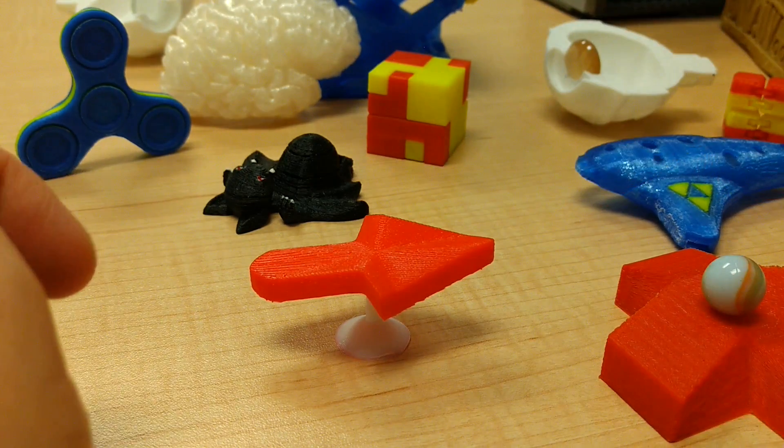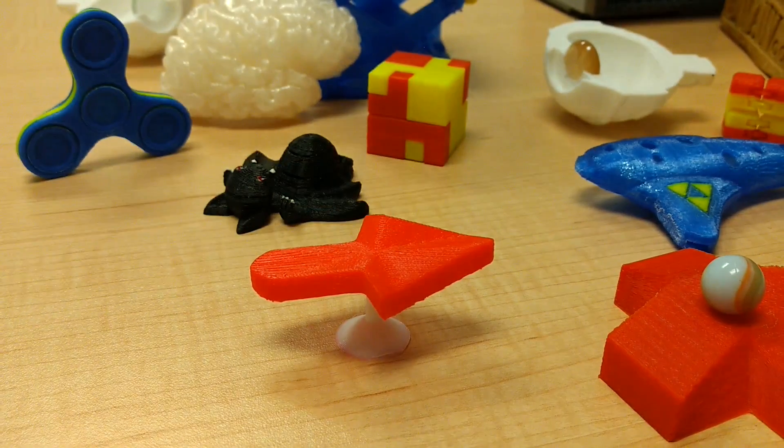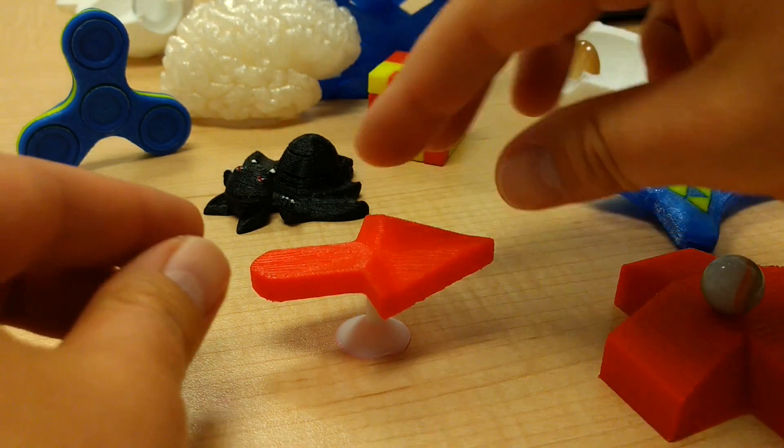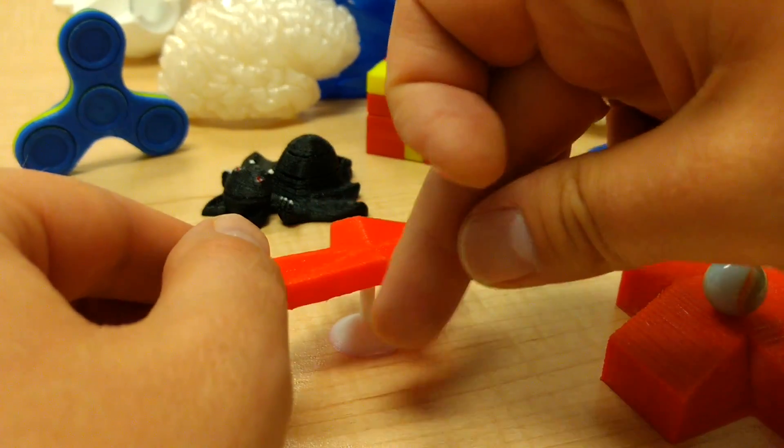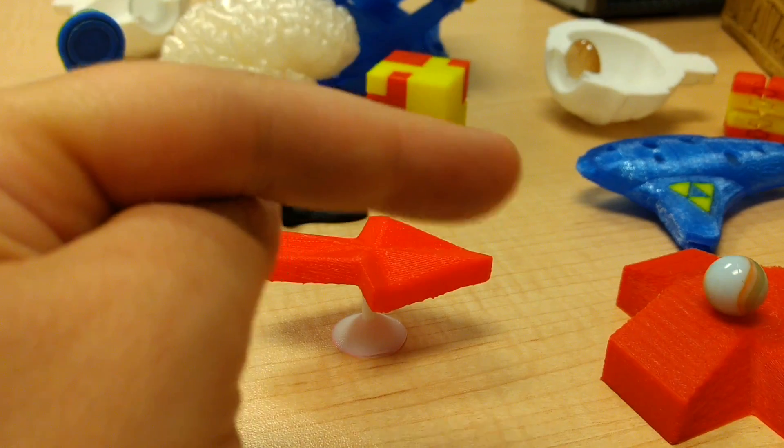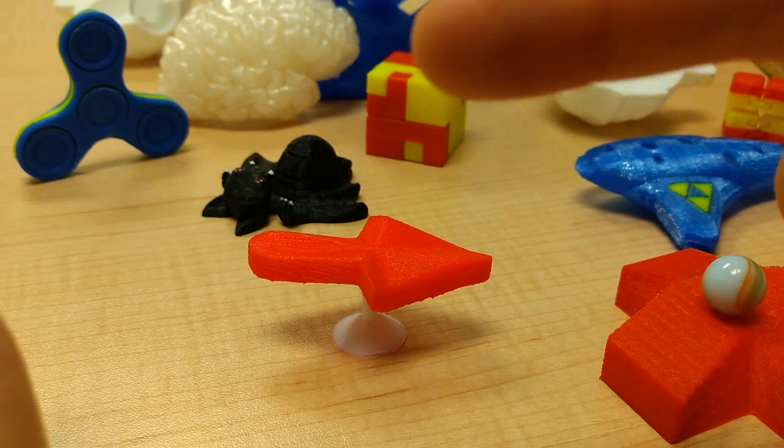So what it is is this arrow. You notice it's pointing to the right. So here's the tricky bit. If I were to rotate this arrow 180 degrees, it still points to the right, never to the left.